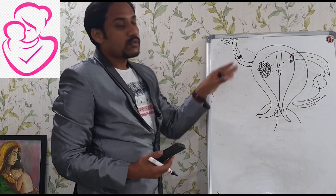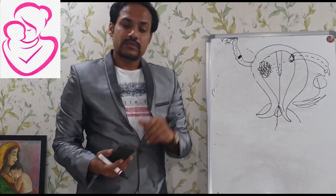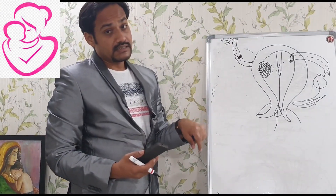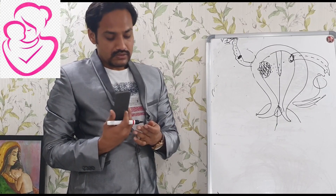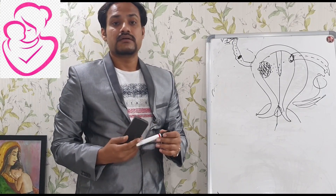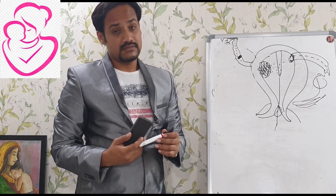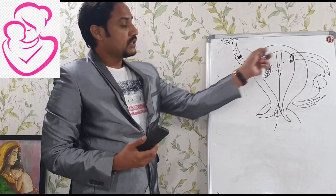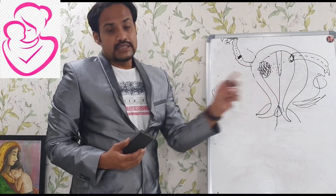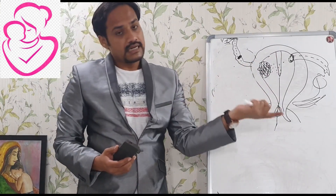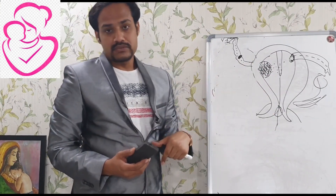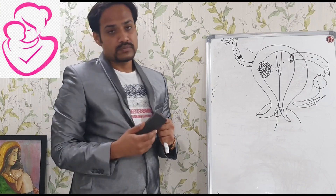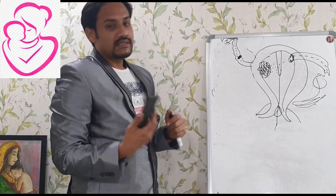Uterine anomaly requires hysteroscopy to confirm. HSG is not a gold standard diagnostic test for detecting uterine anomaly. Uterine anomalies include unicornuate, bicornuate, didelphys, and septate uterus. So you have hysteroscopy, laparoscopy, and a 3D scan for confirmation.